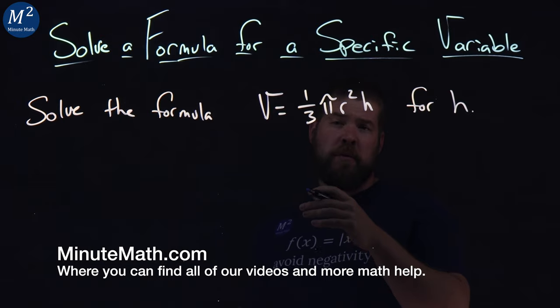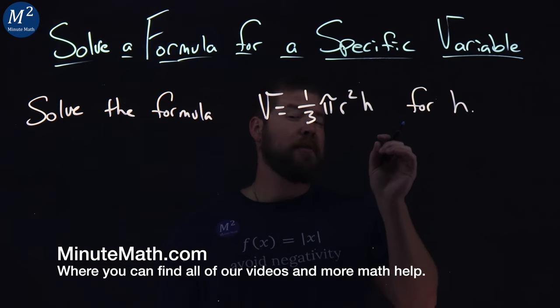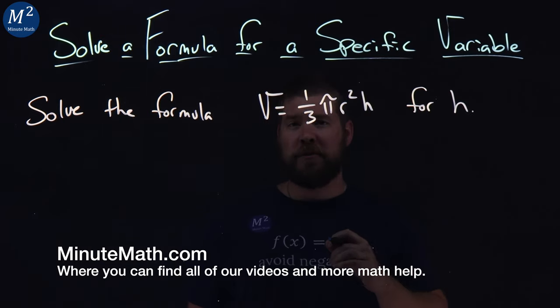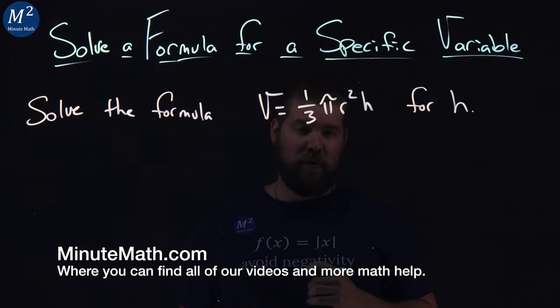We're given this formula: v = ⅓πr²h, and we want to solve this formula for h. This is a right cone volume formula.